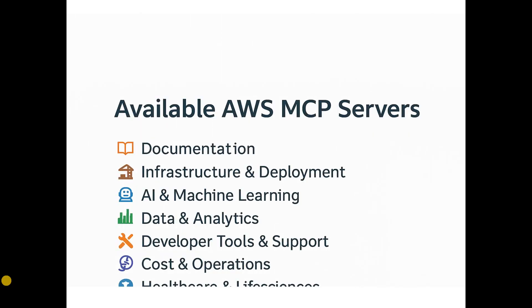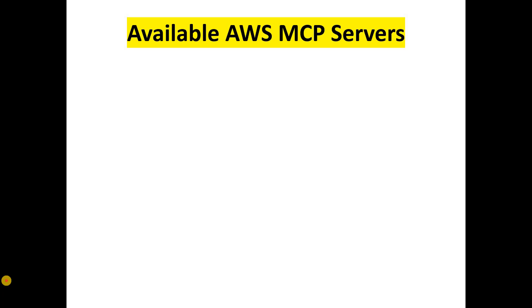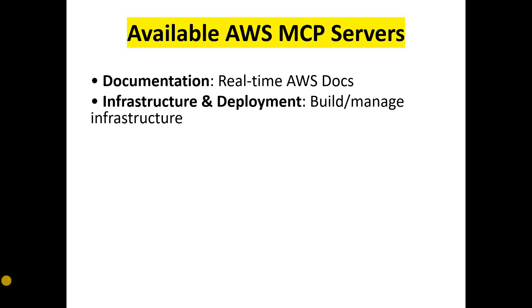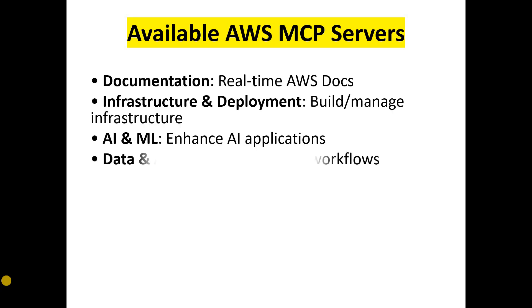Let's look at the available AWS MCP servers. The first is the Documentation AWS MCP server, which gives you access to all AWS documentation — a huge library — so you can get realistic answers. Next is Infrastructure and Deployment, which enables you to build and manage infrastructure intelligently. Then there are MCP servers for AI and ML, which enhance AI application capabilities, and MCP servers for Data and Analytics, which handle data workflows.